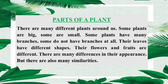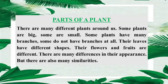There are many different plants around us. Some plants are big, some are small. Some plants have many branches; some do not have branches at all. Their leaves have different shapes. Their flowers and fruits are different. There are many differences in their appearance, but there are also many similarities.